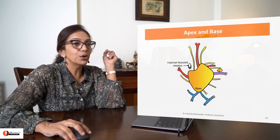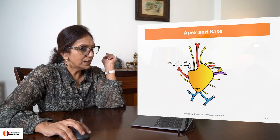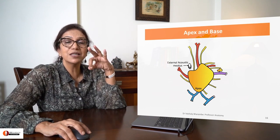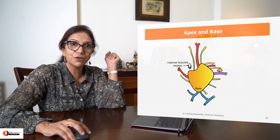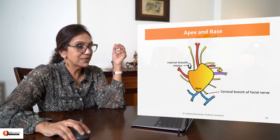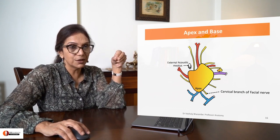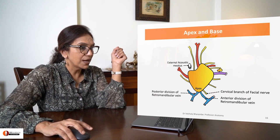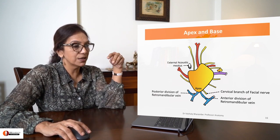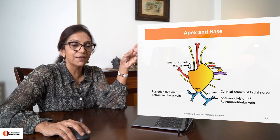Let's talk about the apex and base. Here you are seeing the apex and you are seeing three structures emerging from it. What are the three structures? This is the cervical branch of facial nerve, and these two are the anterior and posterior divisions of the retromandibular vein.